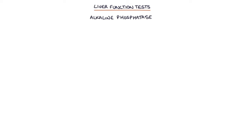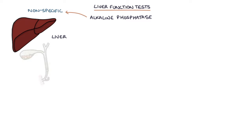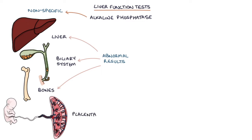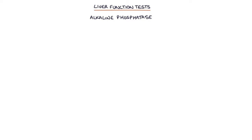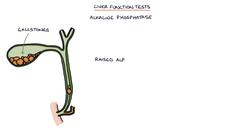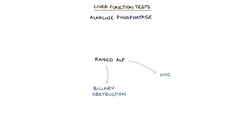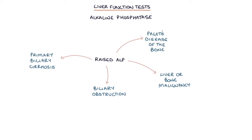Next, alkaline phosphatase, or ALP, is a nonspecific marker. It's an enzyme that originates in the liver, the biliary system, and the bones, and abnormal results can indicate a liver, biliary, or bone problem. ALP is also secreted by the placenta during pregnancy, so pregnant women may have a raised ALP result. In the context of gallstones, a raised ALP result is consistent with biliary obstruction — or obstruction of flow of bile through the biliary system — if also accompanied by right upper quadrant pain and/or jaundice. A raised alkaline phosphatase can also be caused by liver or bone malignancy, primary biliary cirrhosis, Paget's disease of the bone, and many other things.